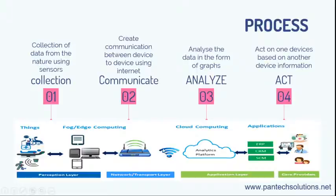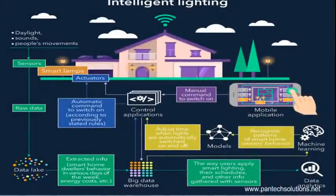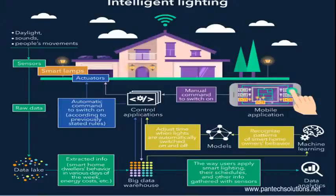Here you can see a presentation about processing with intelligent lighting for your home. Intelligent lighting means — based on the climate condition and day/night condition, it will automatically turn on your light. If any object moves around within your place, automatically the light will be turned on, and then it will check the conditions.